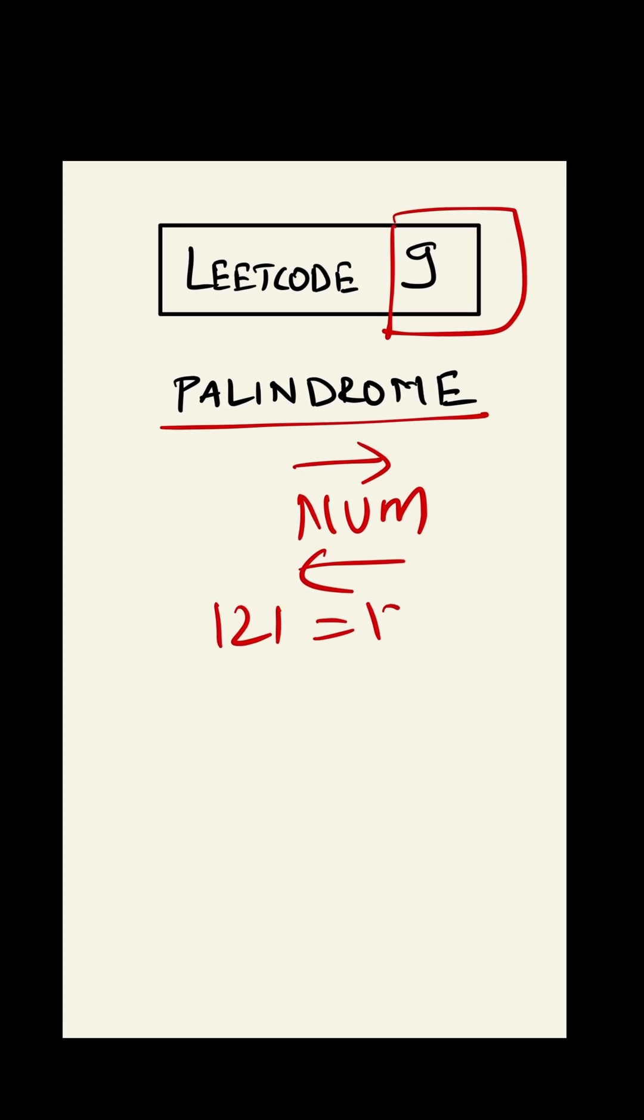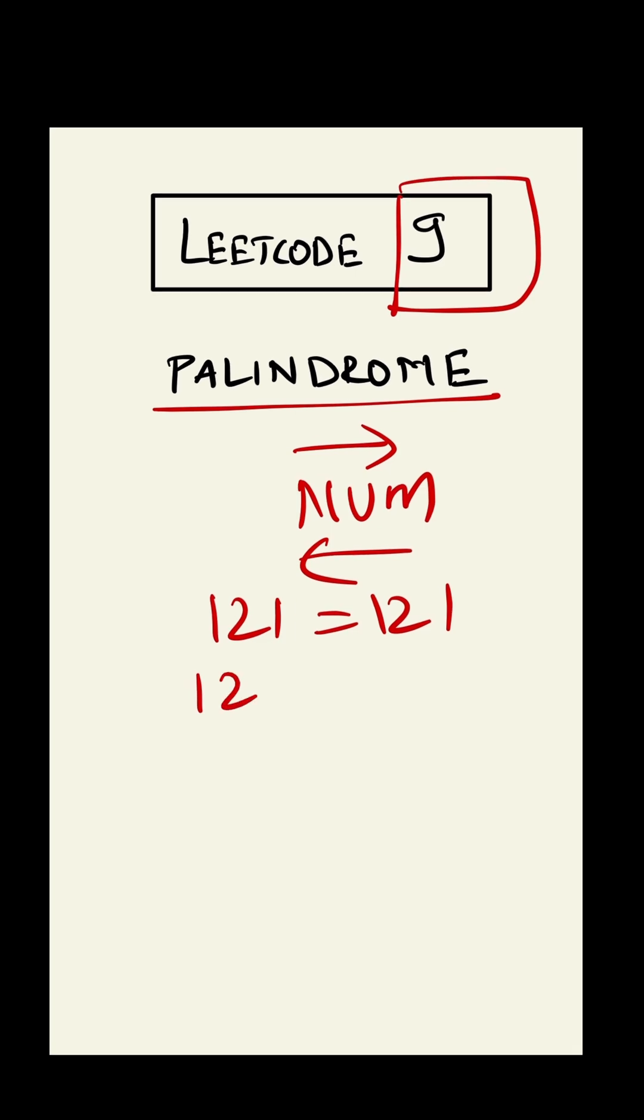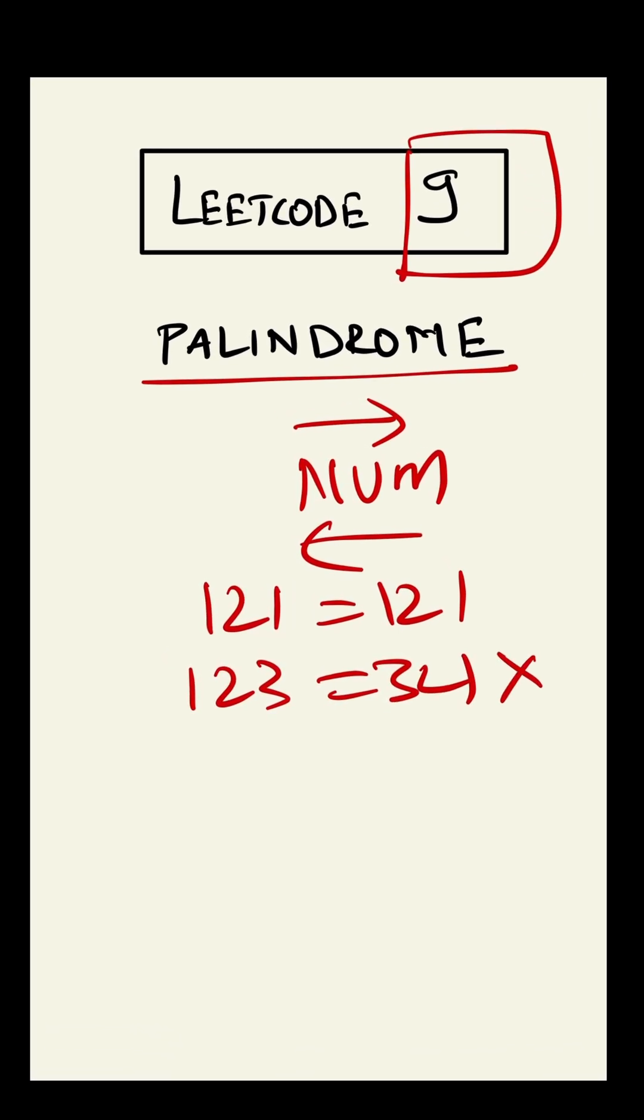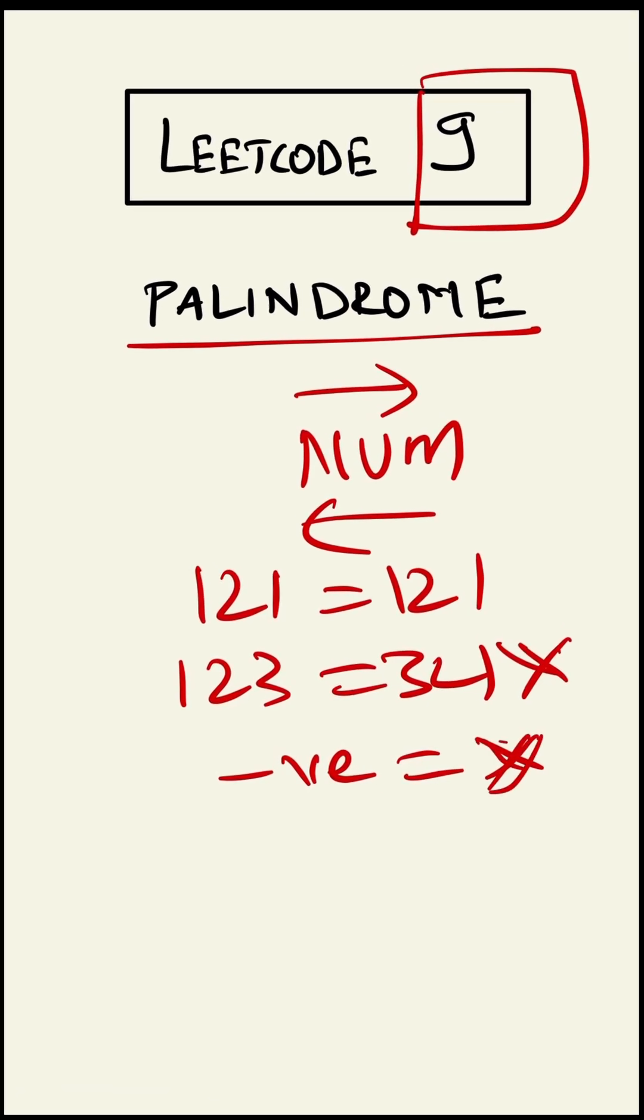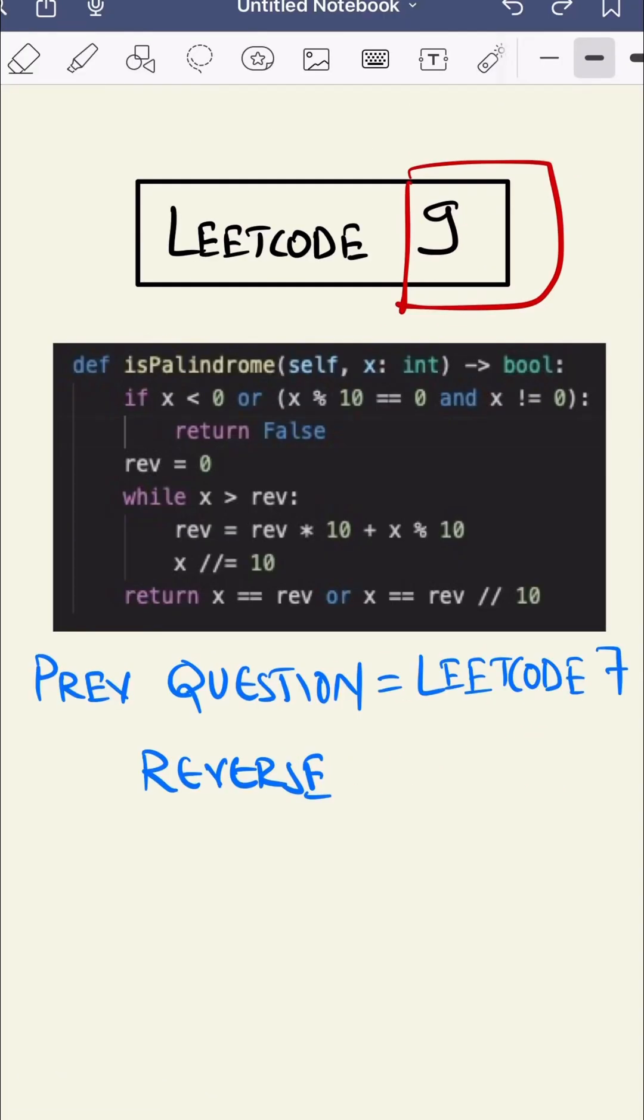123 is not a palindrome. Also, negative numbers are not palindromes. This is our code. As you can see, this question is similar to the previous question where we were finding the reverse of an integer.